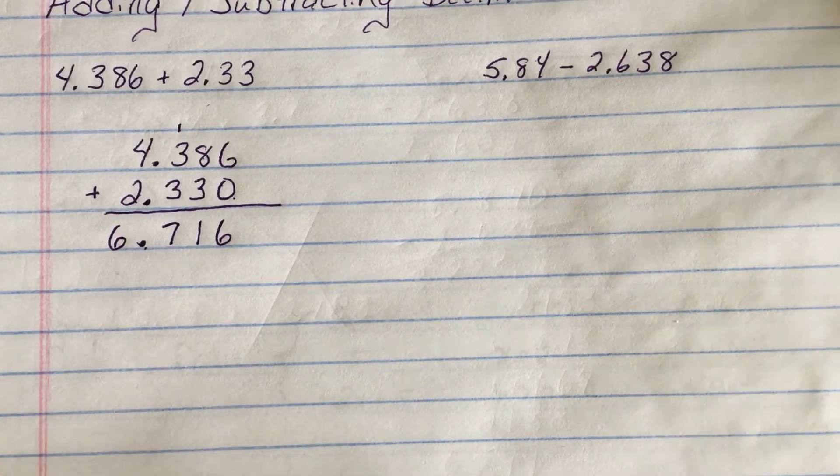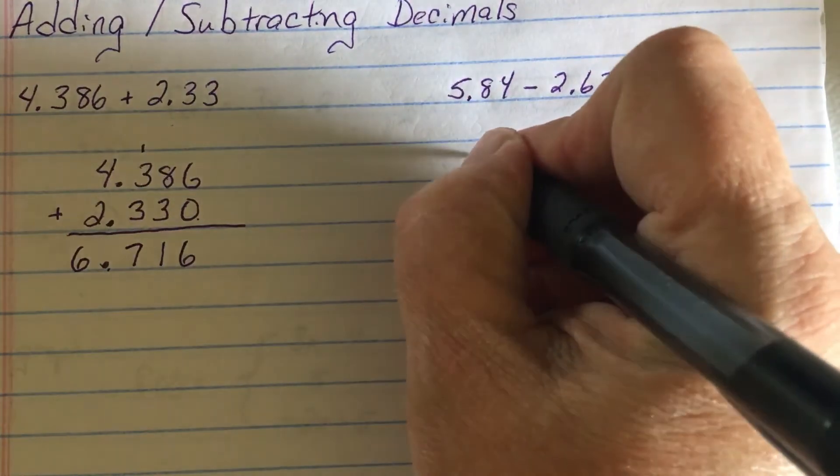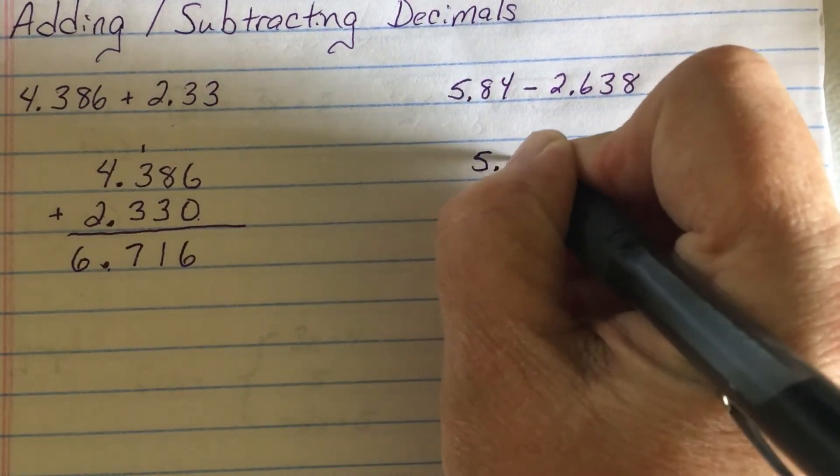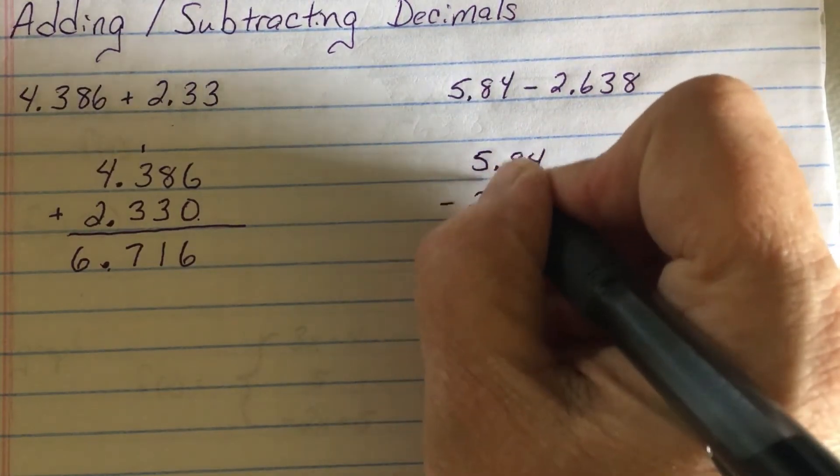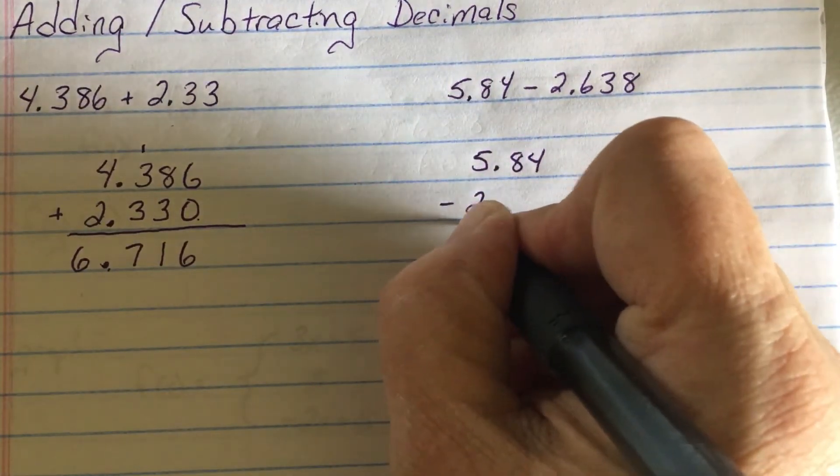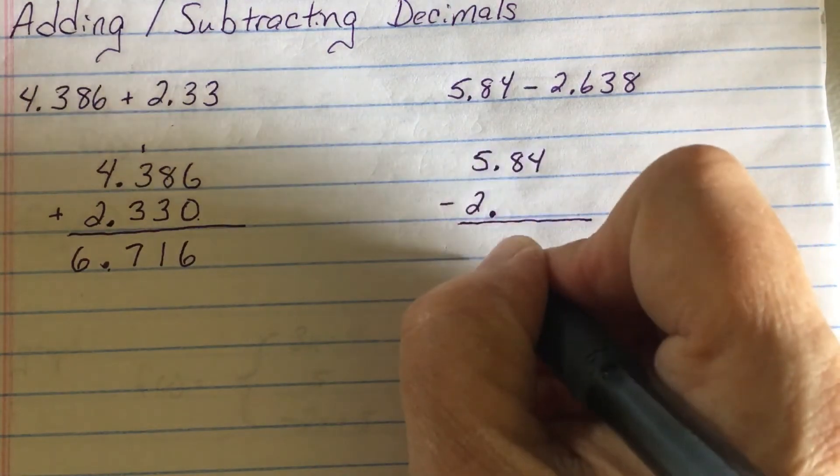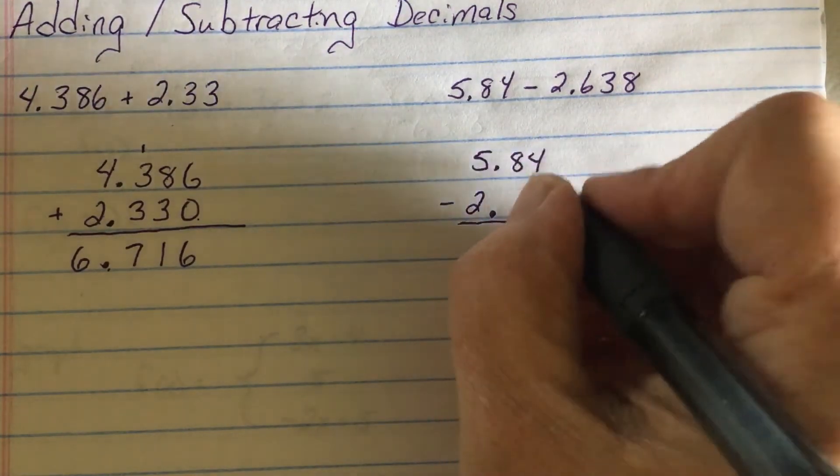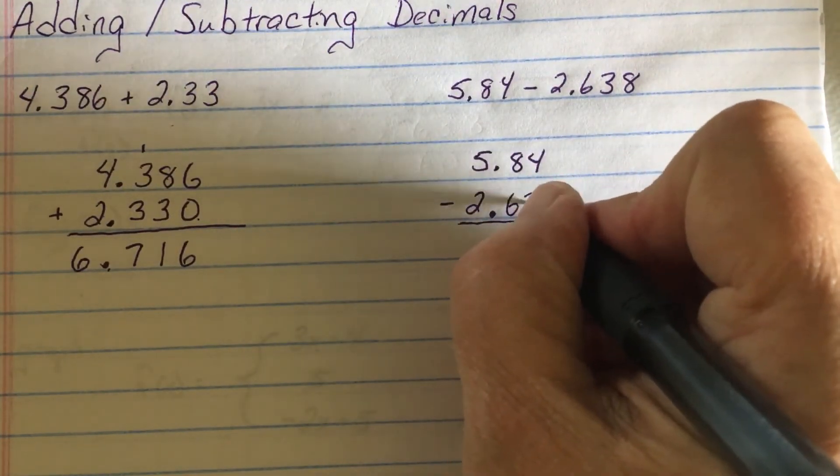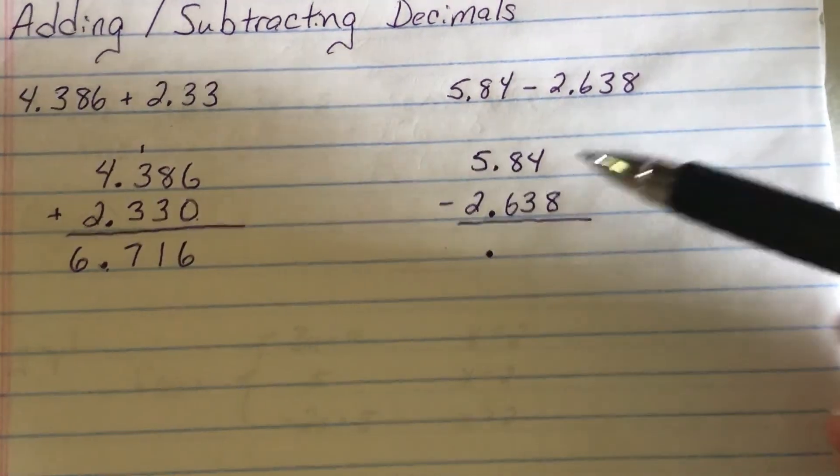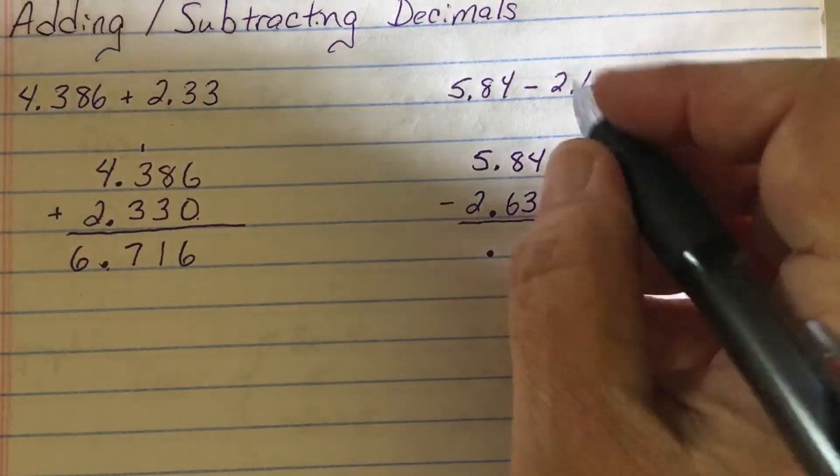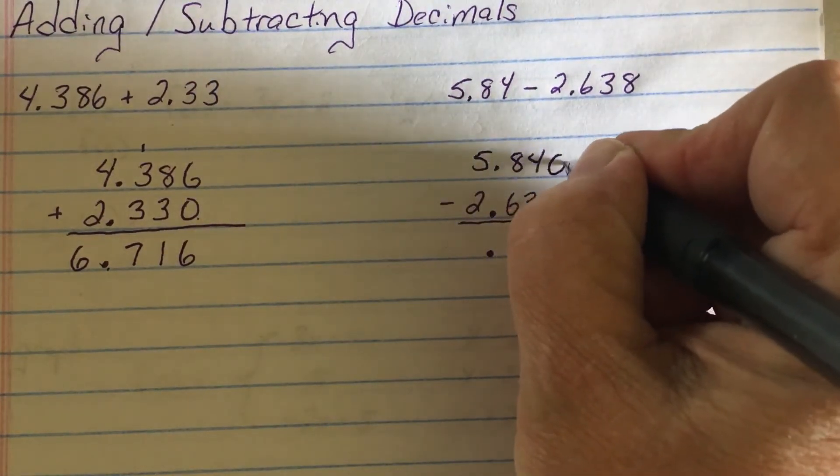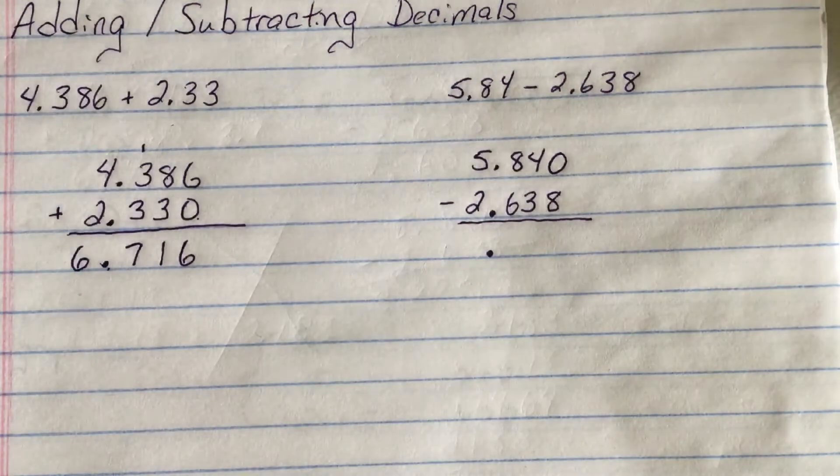Let's look at subtraction. Now this time, five point eight four minus two point six three eight. Again, line the decimals up all the way down. Six, three, eight. Now typically that zero is not needed when you write the number. But for subtraction, I have to have it because eight has to subtract from something. So I'm going to backfill with the zero that we don't typically write.